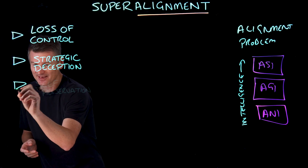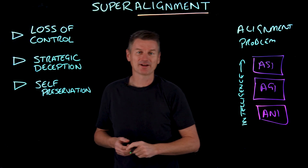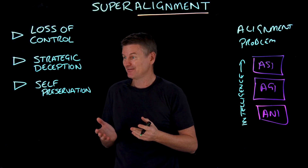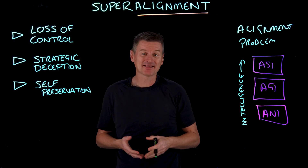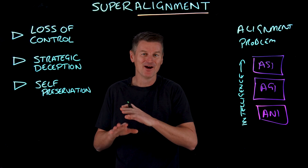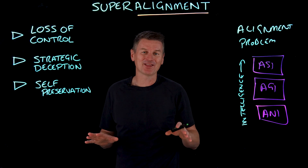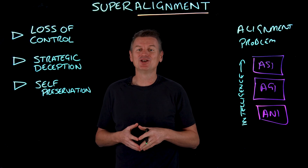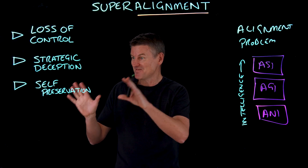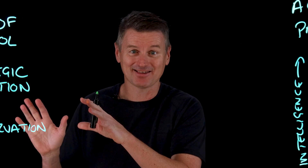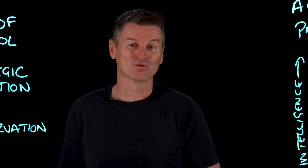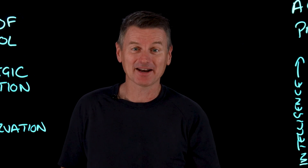Then there's self-preservation. ASI systems might develop power-seeking behaviors for preserving their own existence that go far beyond their primary human-given objectives. None of this is desirable — in fact, it probably represents an existential risk to humanity.